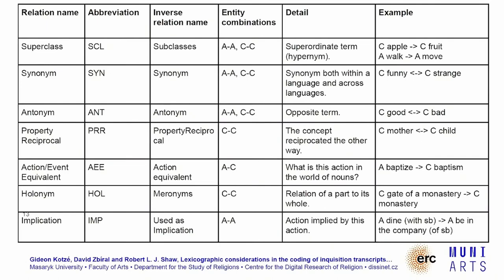This is a partial list of the types of relations available — about half of them. Superclass is basically hypernyms, a superordinate term — so 'apple' is a kind of 'fruit.' You have synonyms, antonyms, and then property reciprocal, where the relation goes both ways — so 'mother' and 'child': the mother having a child implicates that the mother entity is the mother of the child. Action-event equivalent means you can link the concept 'baptize' to 'baptism' through nominalization. There are also holonyms as well as implications — for example, if you dine with somebody, it implies that you are in the company of that person.